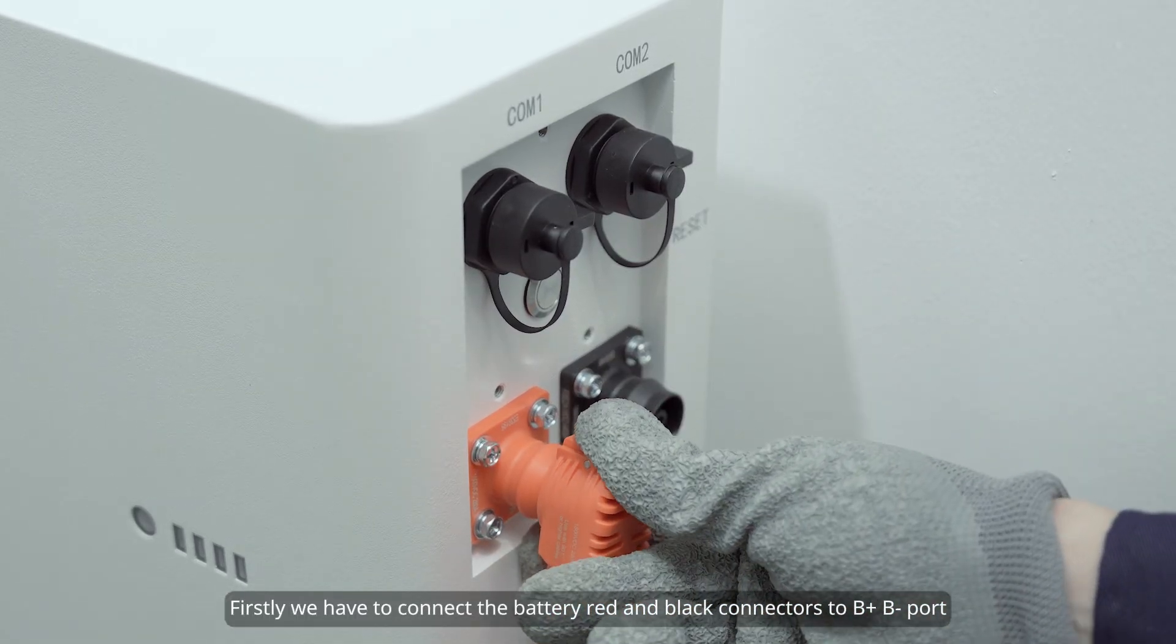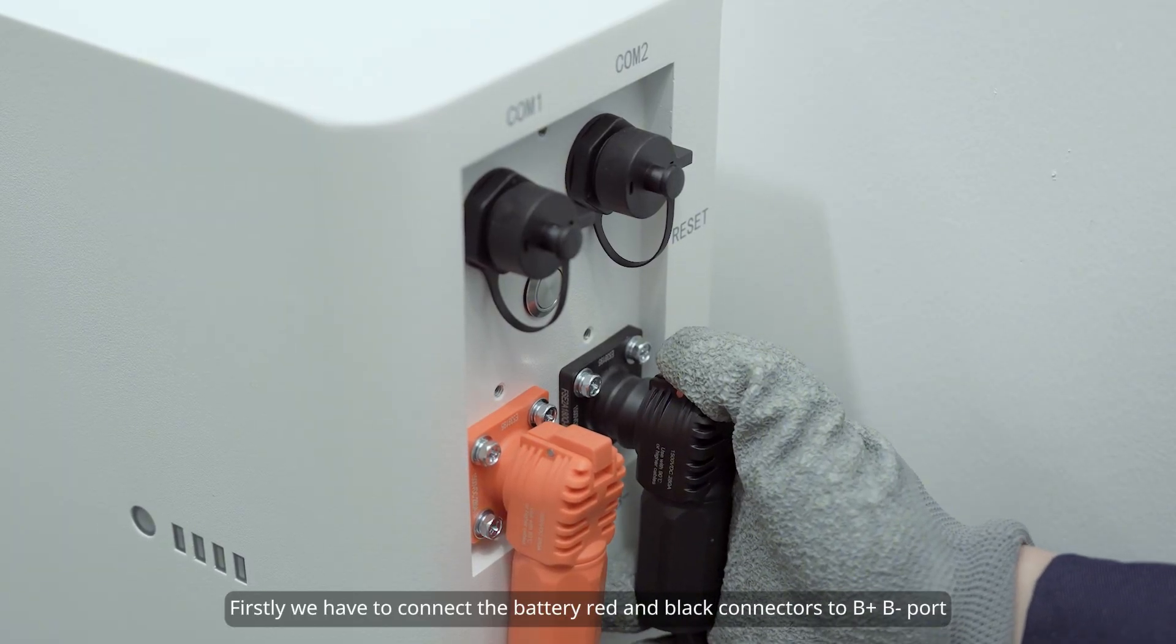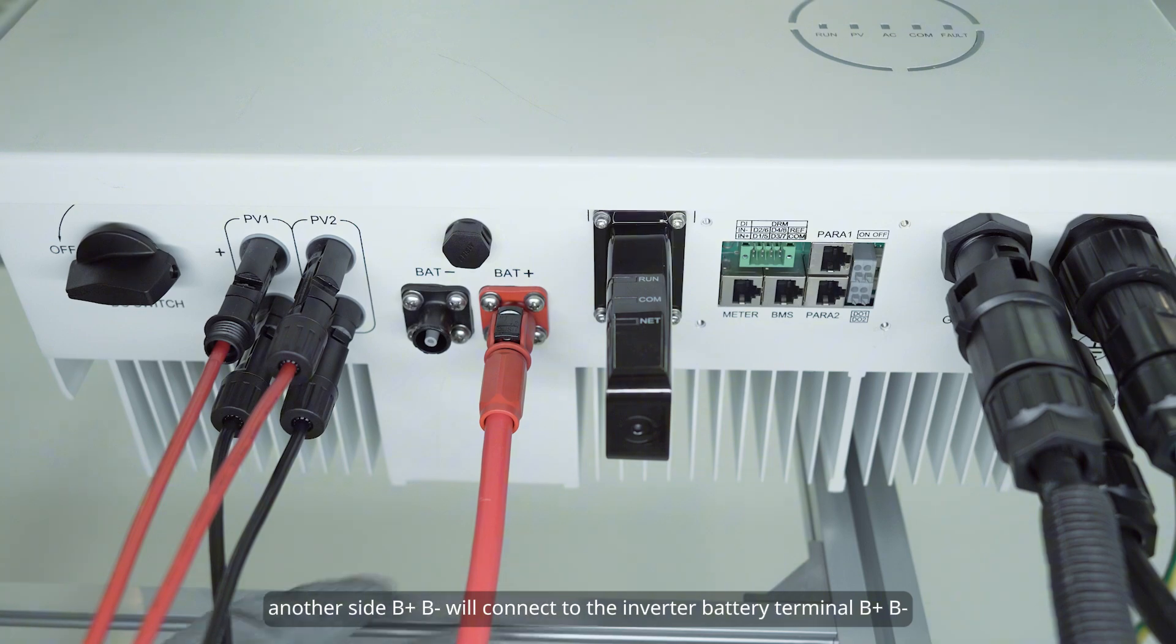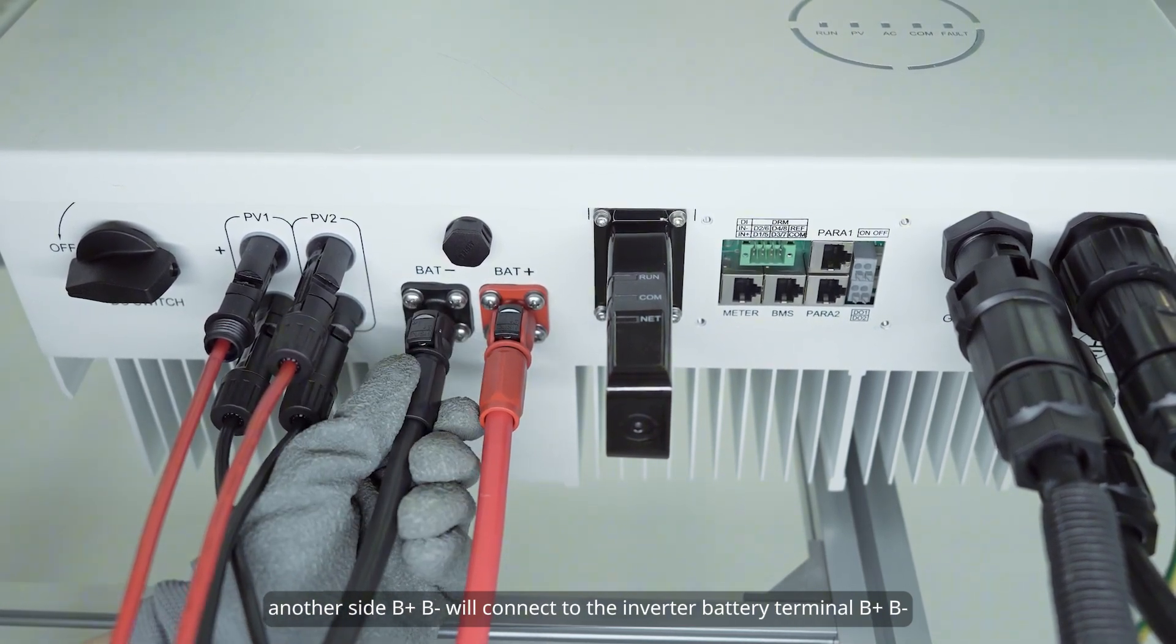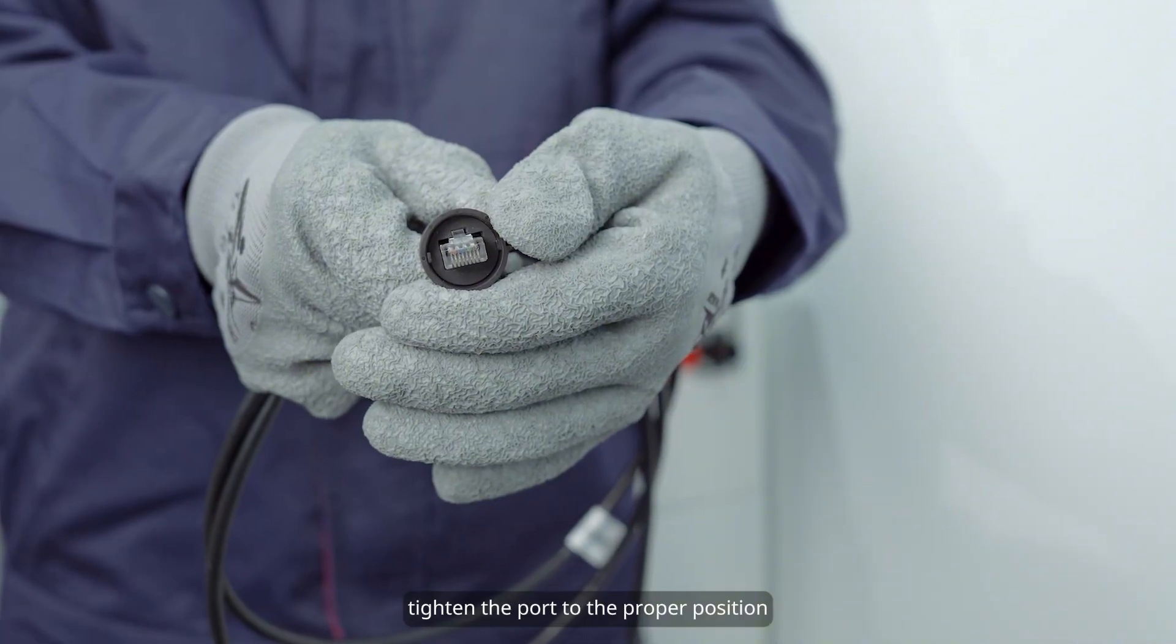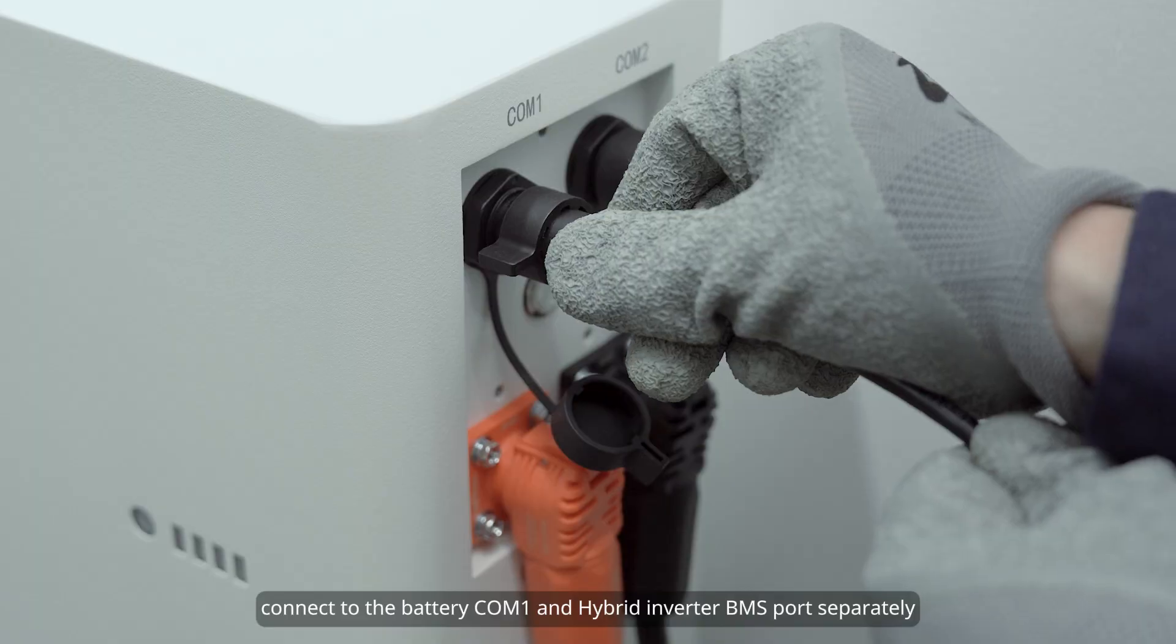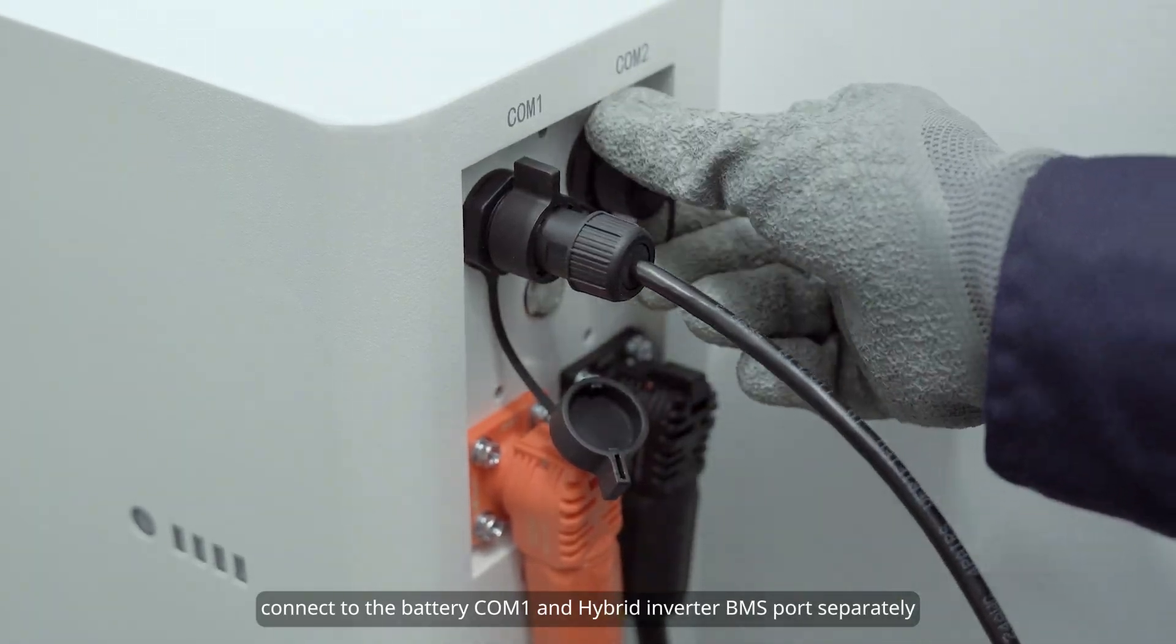Firstly, we have to connect the battery red and black connectors to battery positive and negative port. Another side, battery positive and negative, will connect to the inverter battery terminal battery positive and negative. Then take out the communication cable, tighten the port to the proper position. Connect to the battery communication port 1 and hybrid inverter BMS port separately.